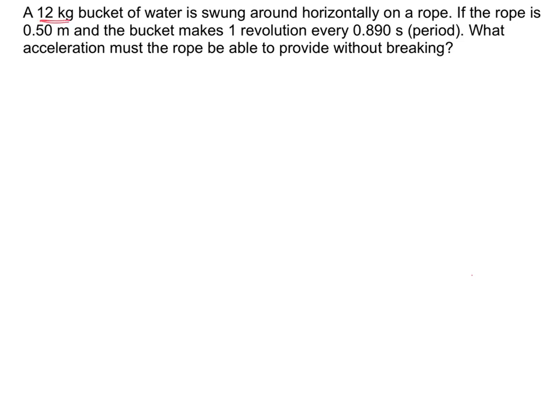All right, let's look at another problem that adds a little bit more complexity here. A 12 kilogram bucket, that's a mass. 12 kilograms of water swung around horizontally. That means parallel to the ground. Vertically means that you're going up and down horizontally, maybe swung horizontally over their head because they're crazy. And they're not afraid of water spilling on them because they understand the idea of centripetal force. Anyway, on a rope, if the rope has a radius or a length of 0.5 meters and the bucket makes one revolution every 0.890 seconds, that's the period. I'm going to use capital T. Be careful, capital T period, capital T tension.